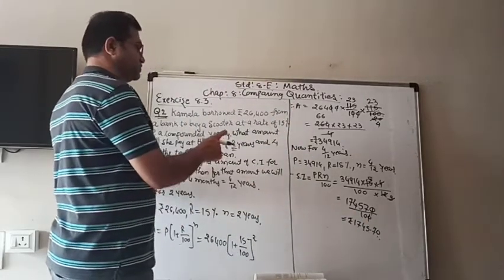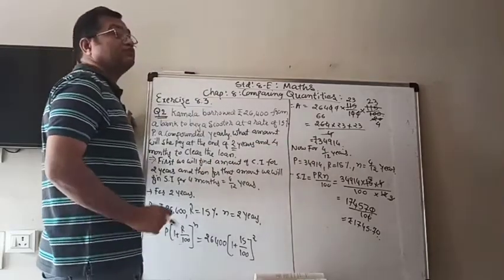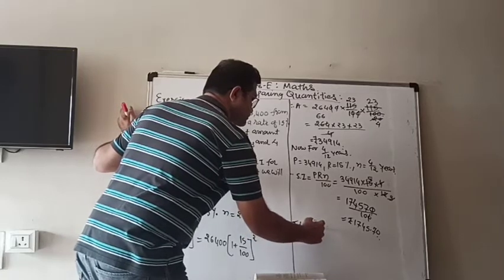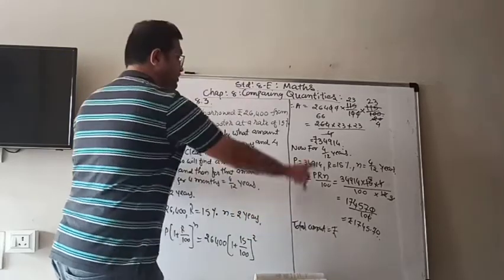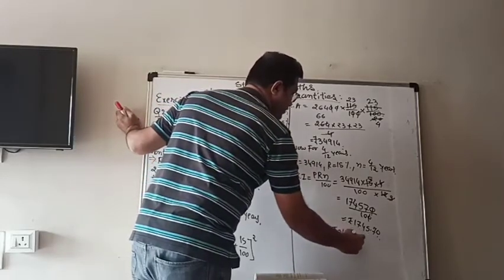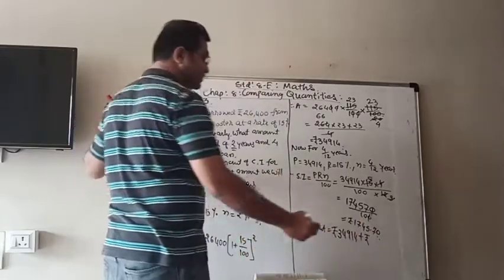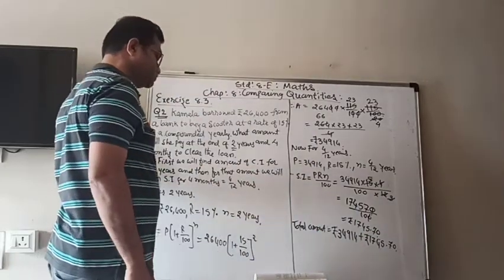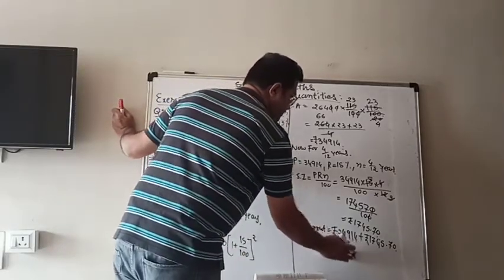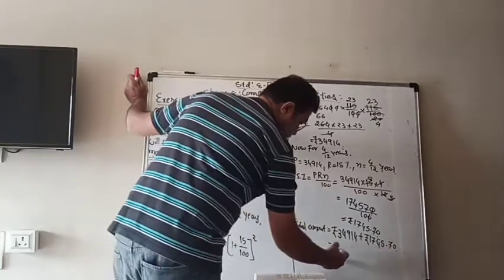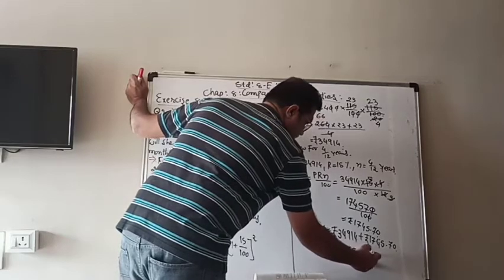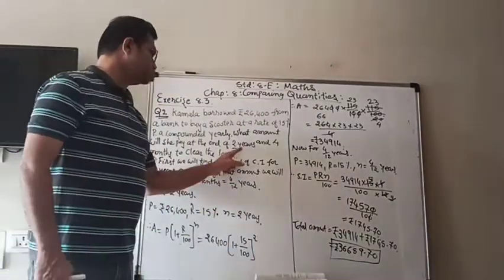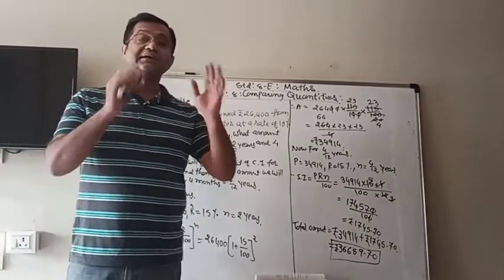Now, the simple interest also should be added for the total amount she has to pay. Total amount = 34,914 + 1,745.70 = Rs. 36,659.70. That is the amount she has to pay after 2 years and 4 months to clear the loan.